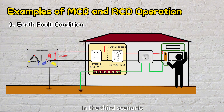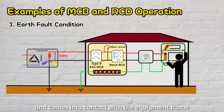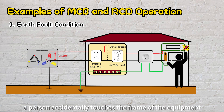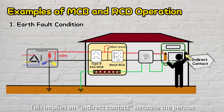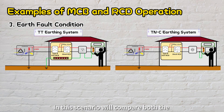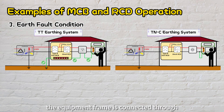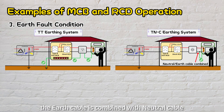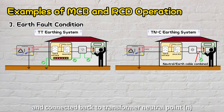In the third scenario, we will examine an earth fault situation where the live cable is broken and comes into contact with the equipment frame. Simultaneously, a person accidentally touches the frame of the equipment — an indirect contact because the person does not directly touch the live cable. In this scenario, we'll compare both the TT and TNC earthing systems. For a TT system, the equipment frame is connected through an earth cable to an earth rod. For a TNC system, the earth cable is combined with the neutral cable and connected back to the transformer neutral point.